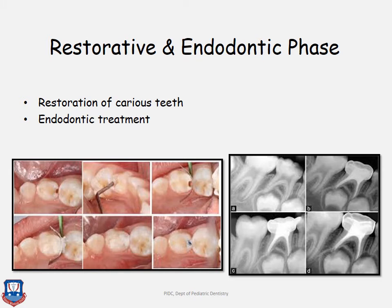In the restorative phase, any tooth that is carious and can be restored is restored with GIC, composites, or tooth-colored restorative materials. In the endodontic phase, teeth with deep caries lesions are treated with endodontic treatment. For primary teeth, this means pulpotomy or pulpectomy; for mixed or permanent dentition, root canal treatment (RCT) is done.